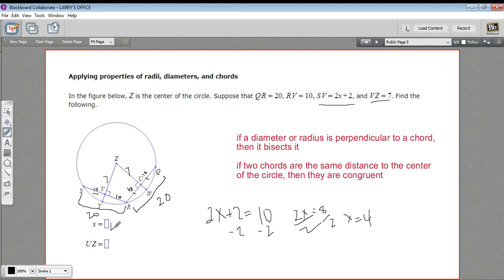Okay, so X is 4. And then we want to find the measure of segment UZ. And we already marked that in. It's the same as this segment over here because the chords are congruent. So that is 7. So that's a little bit of work with the properties of chords and radii and diameters.